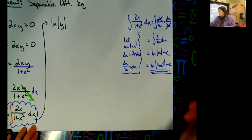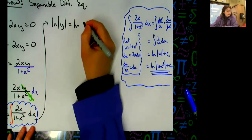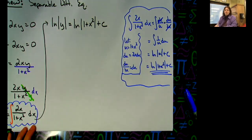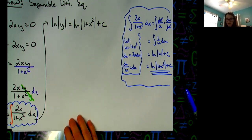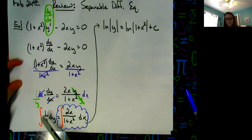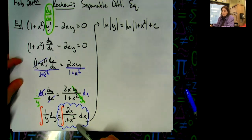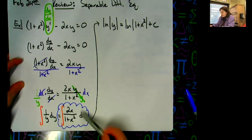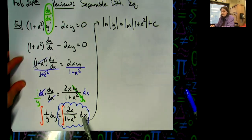You can work out the u-substitution in the margin of your paper, then bring the result back into the main work. So the integrated equation is: natural log absolute value of y equals natural log of absolute value of one plus x squared, plus C. Integrating both sides simultaneously keeps the work clean.